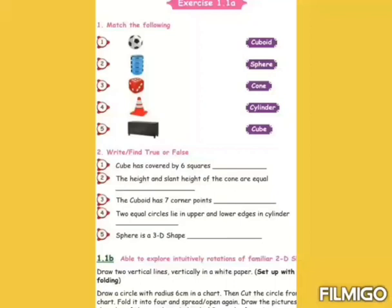First roman letter, match the following. First one answer, sphere. Second, cylinder. Third, cube. Fourth, cone. Fifth, cuboid.